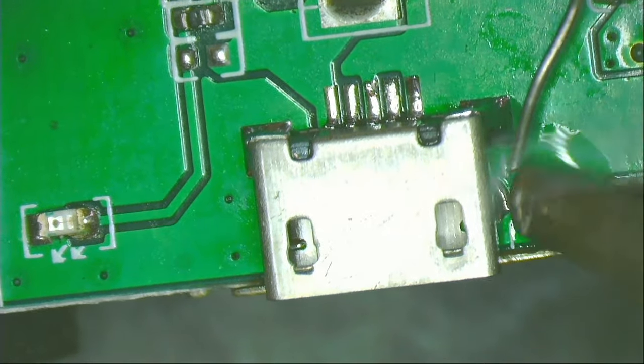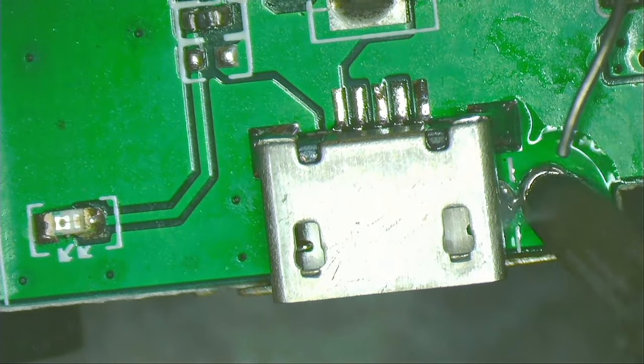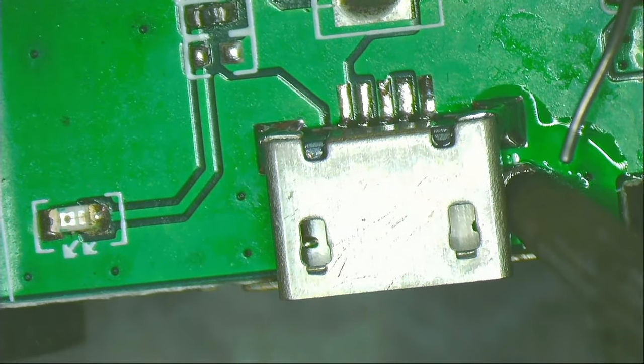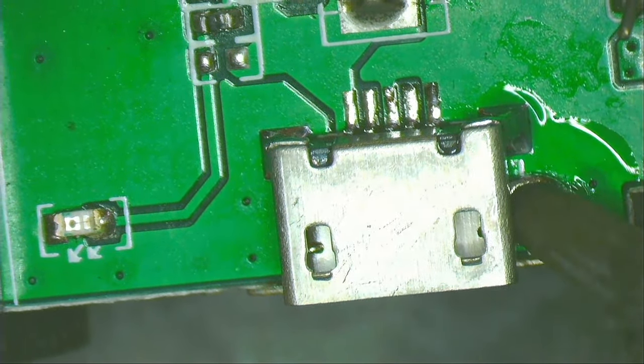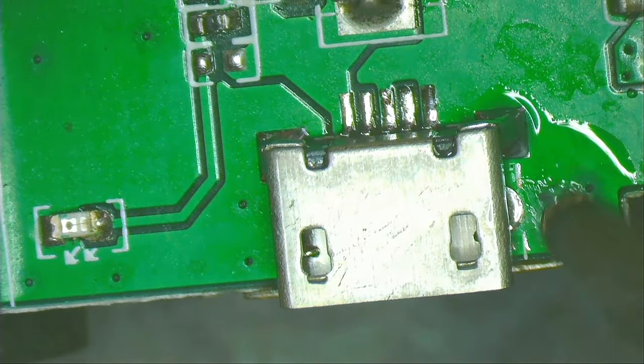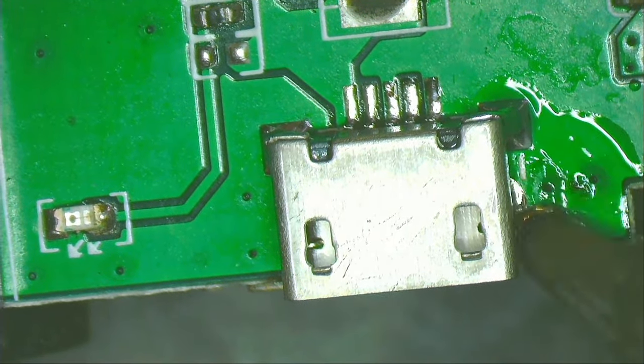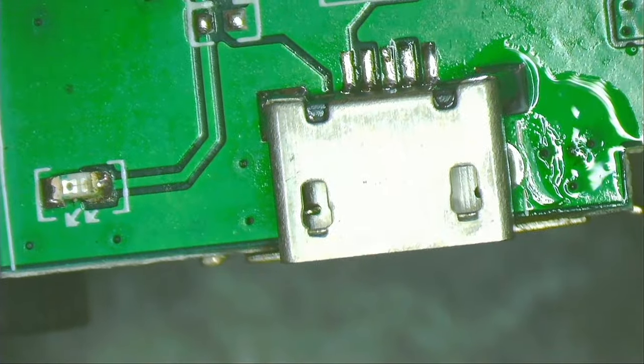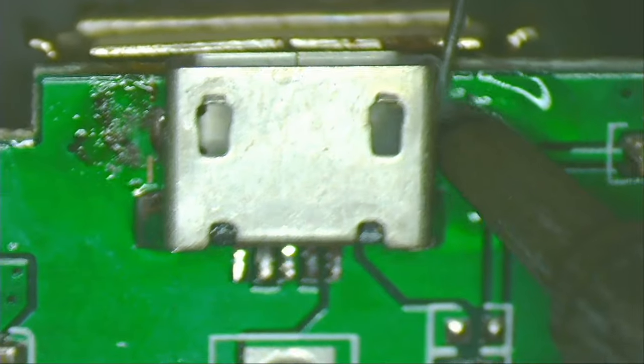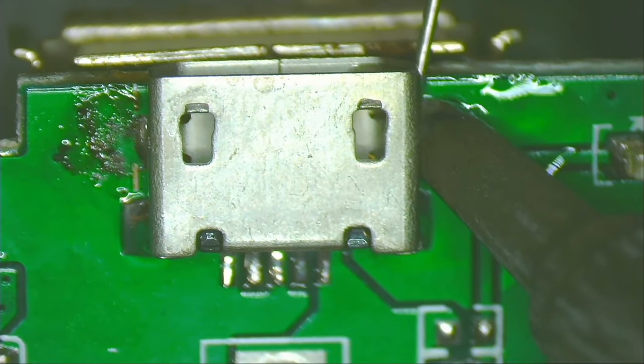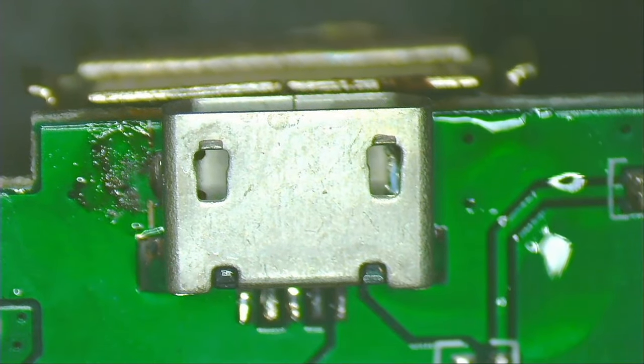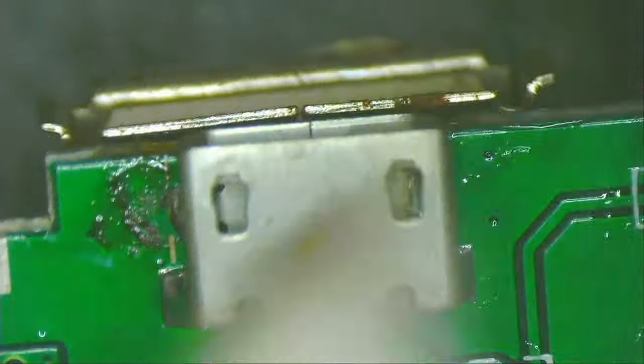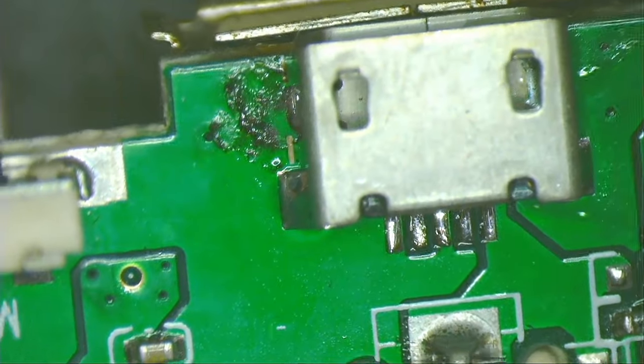The higher the temperature, the faster the flux burns. Burnt flux sticks to the board and is more difficult to clean. Here we have burnt flux stuck to the board and we can see that the cotton swab with isopropyl alcohol does not remove it.